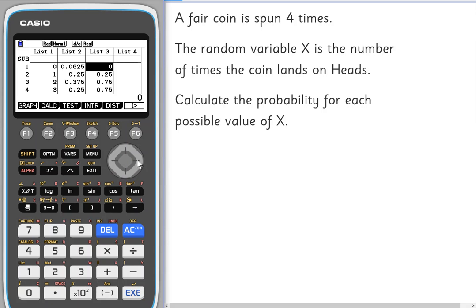To work out the variance we need to know the expected value of X squared. To square our X values and then multiply those by the associated probabilities, we're going to put that in list 4.